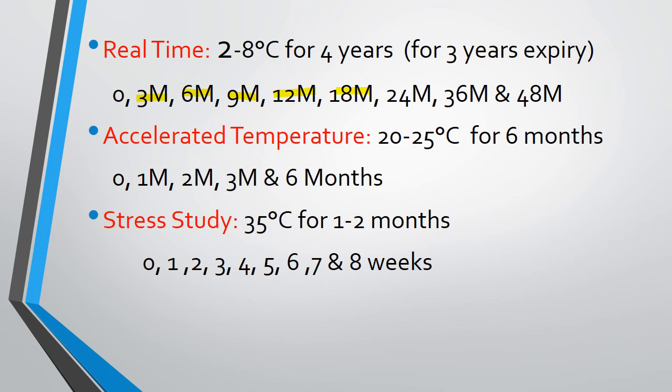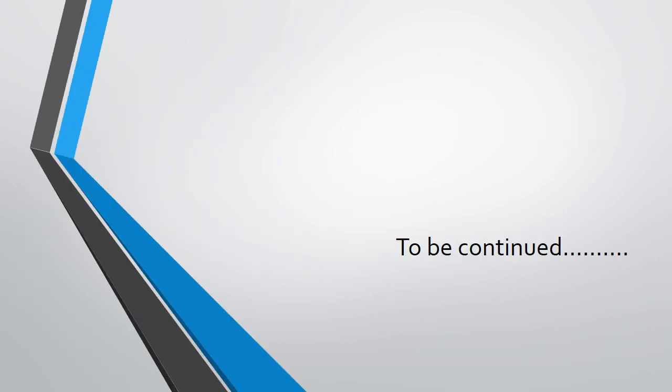Accelerated studies are performed at 20 to 25 degrees centigrade for 6 months, with testing at 0, 1, 2, 3, and 6 months. Stress studies are performed at 35 degrees centigrade for 1 to 2 months, with testing at 0, 3, 4, 5, 6, 7, and 8 weeks. So that's all about this lecture.